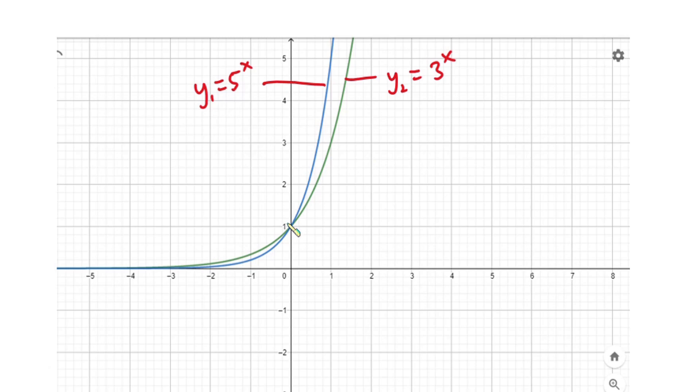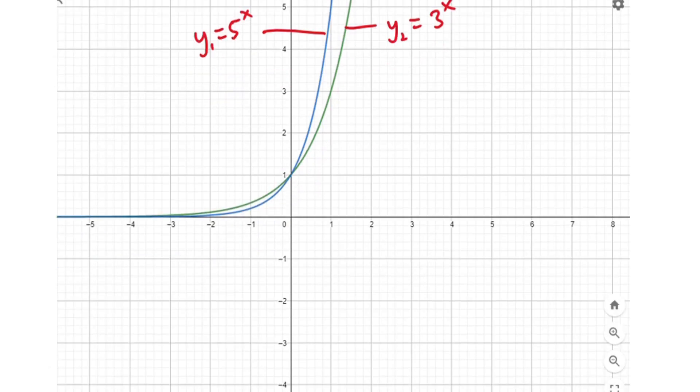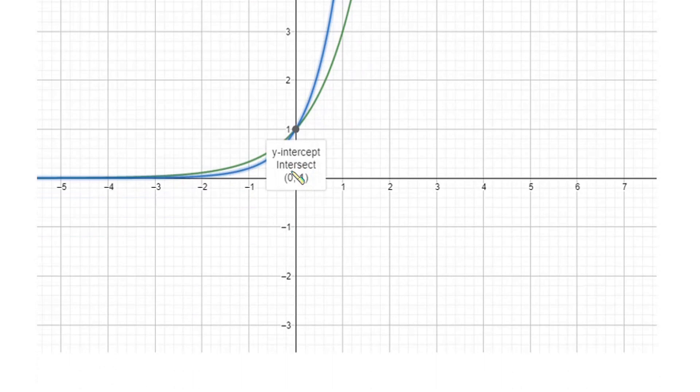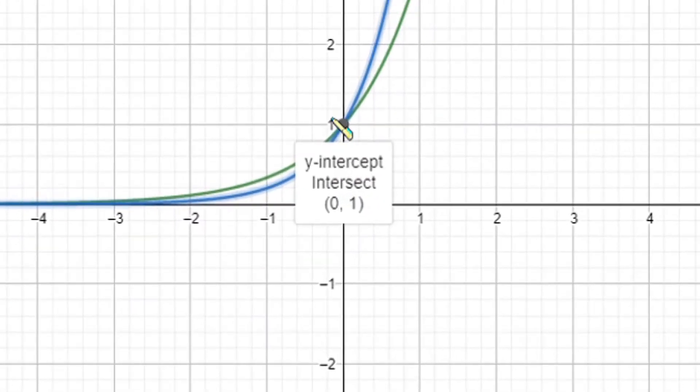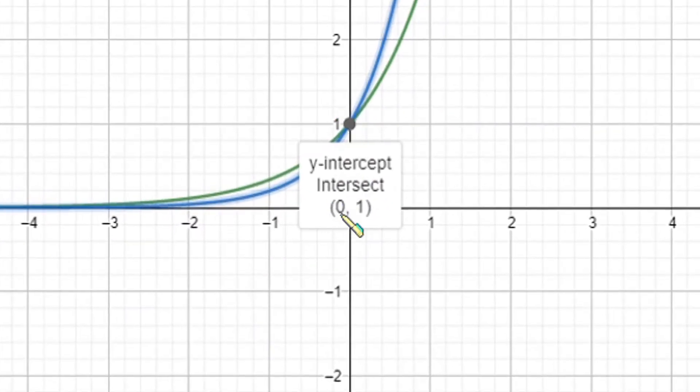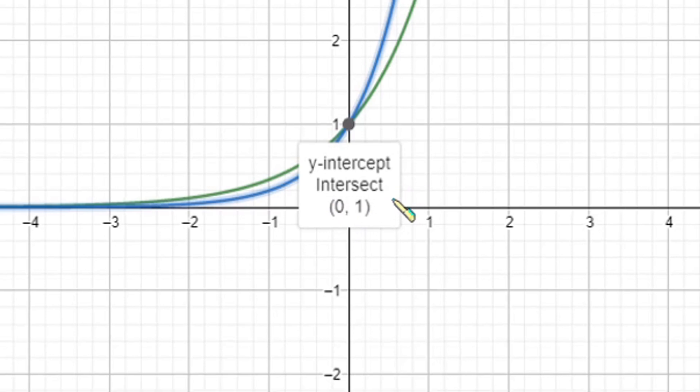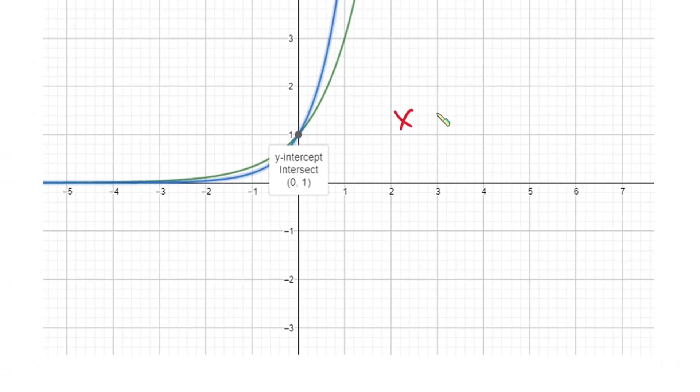So if I click on this graph, you can see it here - you can see the point of intersection is (0, 1). So it means that this equation has only one solution, which is x = 0.